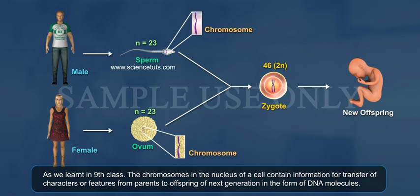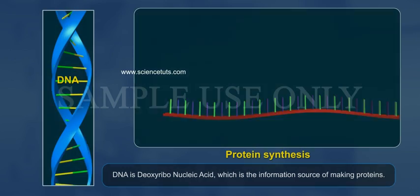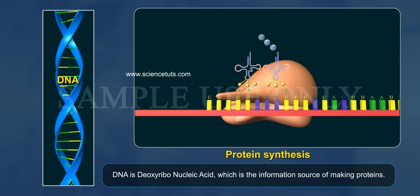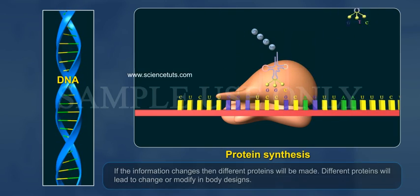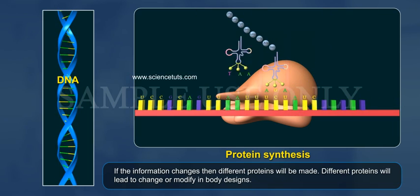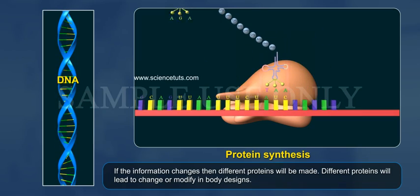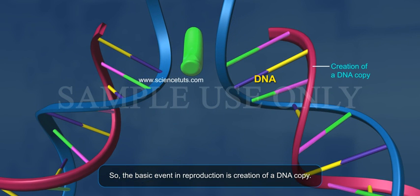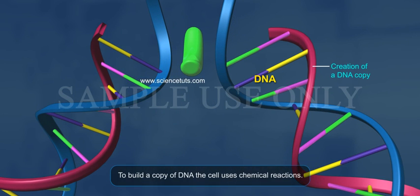As we learned in ninth class, the chromosomes in the nucleus of a cell contain information for transfer of characters or features from parents to offspring of the next generation in the form of DNA molecules. DNA is deoxyribonucleic acid, which is the information source for making proteins. If the information changes, then different proteins will be made, and different proteins will lead to changes or modifications in body designs.